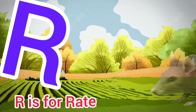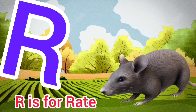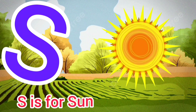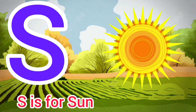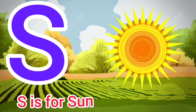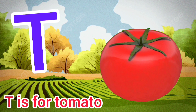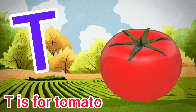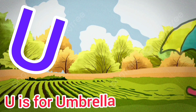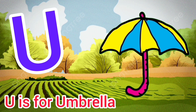R is for Rat. S is for Sun, sa-sa-Sun. T is for Tomato, ta-ta-Tomato. U is for Umbrella.